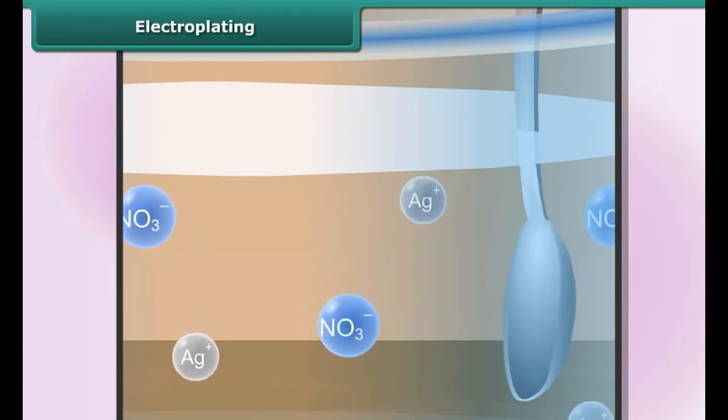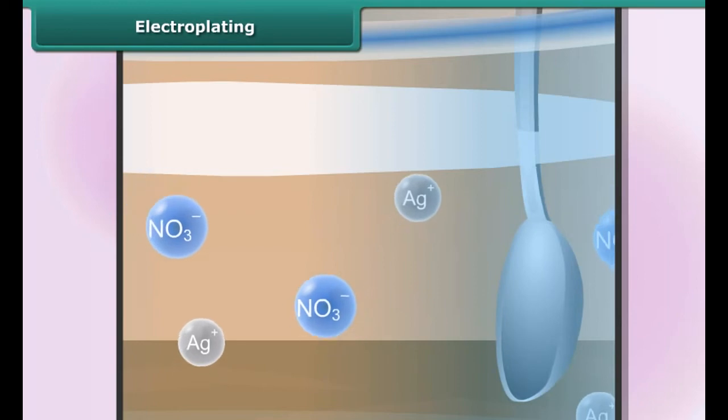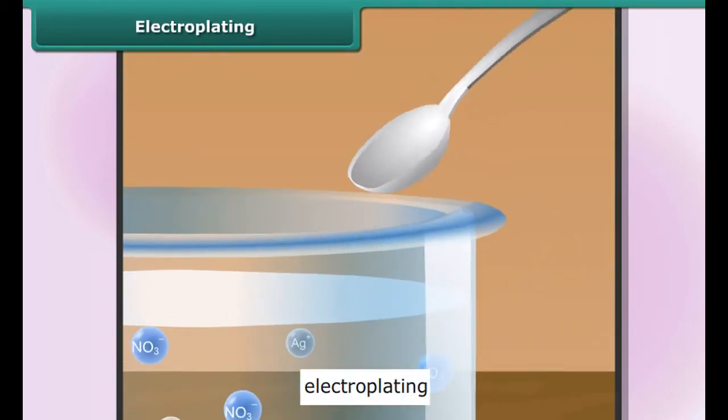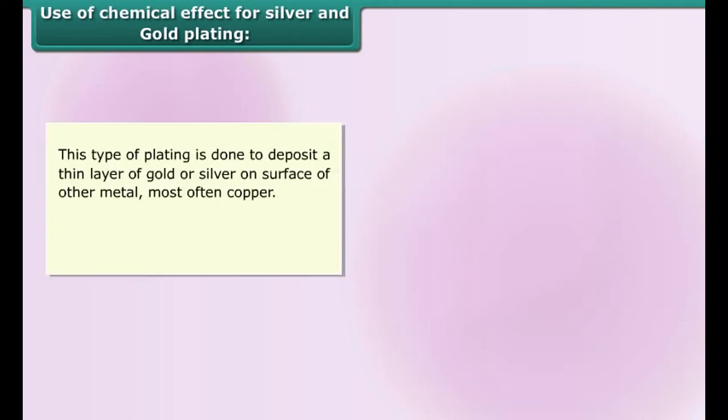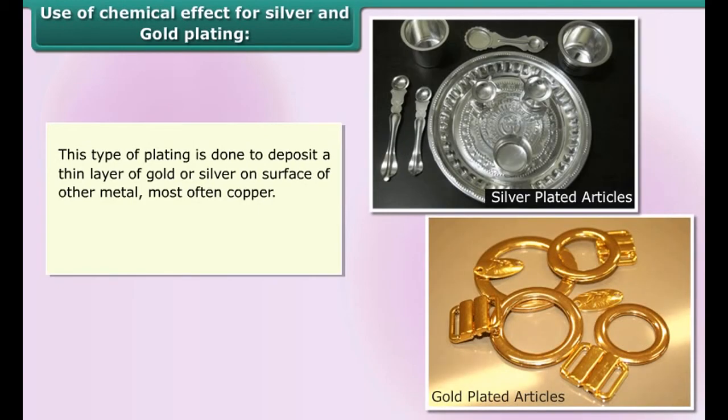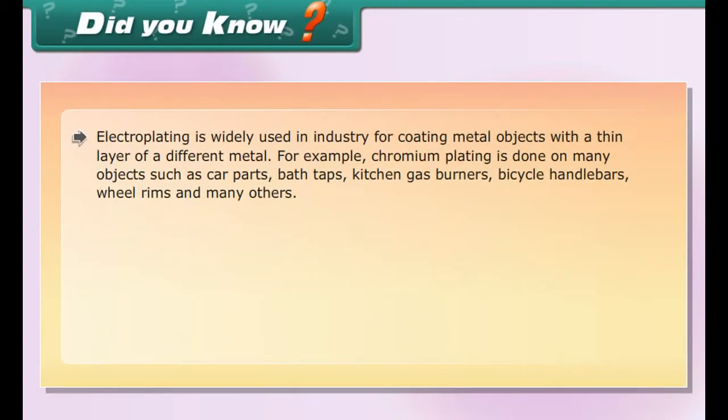As soon as electric current starts flowing through the solution, electrons begin to escape from the silver anode. This results in the formation of positively charged ions which separate from the anode and pass into the solution. There they migrate towards the cathode, attracted by its negative charge. When they reach the cathode, they accept electrons from it and change into silver atoms which deposit onto the cathode in the form of a thin metallic layer. The thickness of the layer depends on the conditions under which the electrolysis is conducted. This process is known as electroplating.